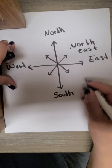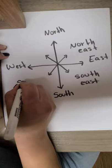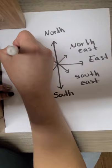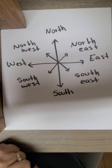Between east and south we're going to write southeast. Between west and south we will write southwest, and here we will write northwest. And our compass rose is complete.